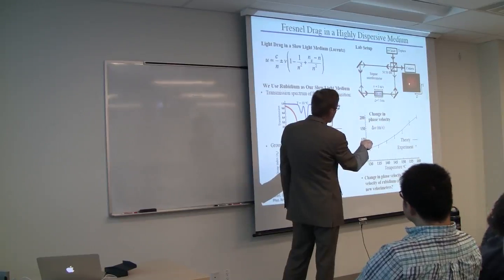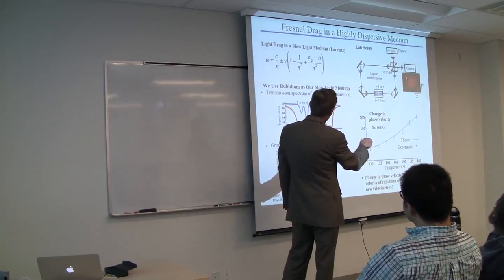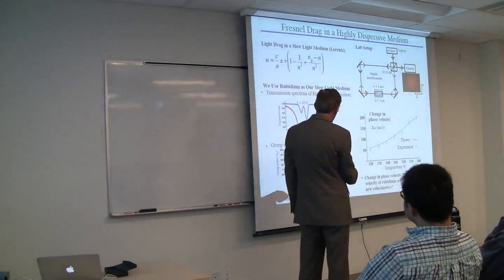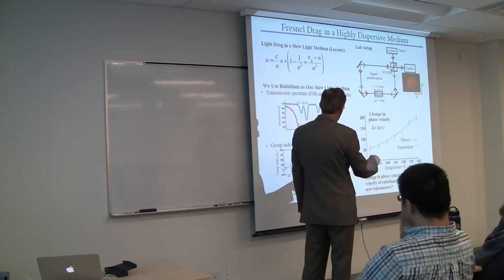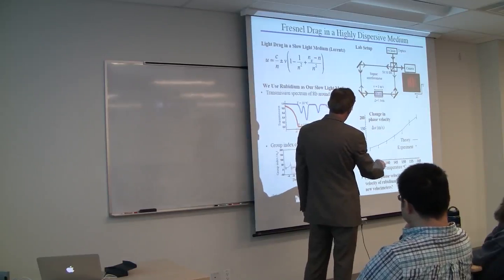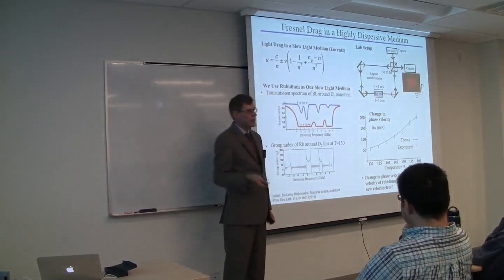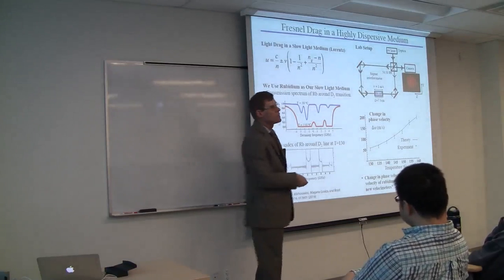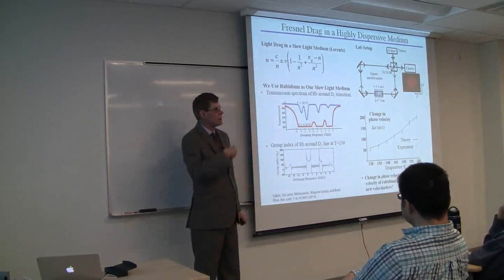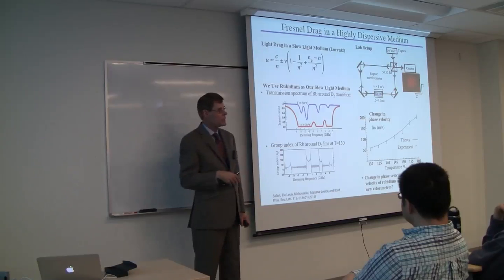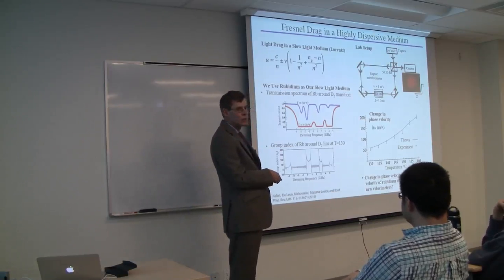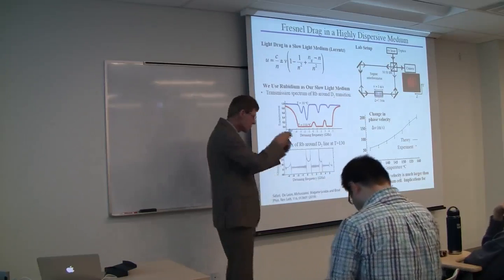This camera measures the fringe pattern. Knowing how much the fringe pattern moves, we can tell how much the phase velocity moves. This is the change in phase velocity for various temperatures of the cell. We get very good agreement between theory and experiment. Where is this work heading? We found a way to amplify the influence of Doppler motion. We're hoping we can build better velocimeters by making use of this sort of interaction.